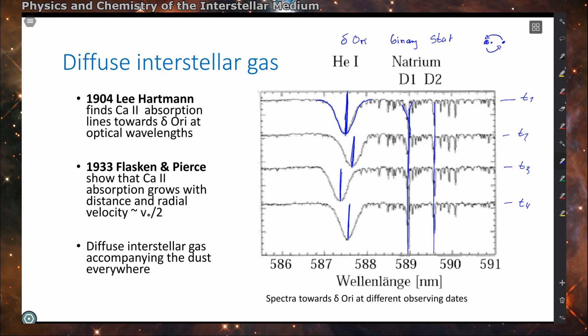However, these sodium features remain constant, so they cannot be directly related to the star. They have to come from material that is between the star and the observer. This is the first case of absorption of light by the interstellar medium.